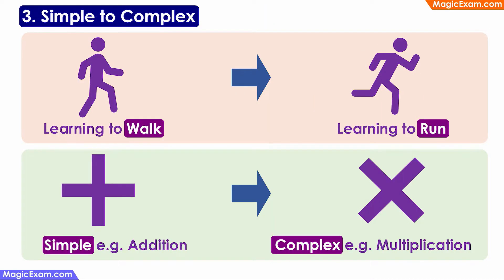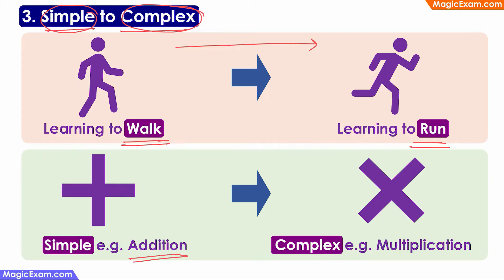The next principle is simple to complex. A person must learn simple things first and only then progress towards more complex activities. In physical development, a baby will first learn to walk, and only then move towards a more complex activity such as running. In cognitive development, a person learns a relatively simple process like addition first and only then moves towards a more complex process like multiplication. So any type of development starts with simple things first and then moves towards more complex aspects — this is the simple to complex principle.